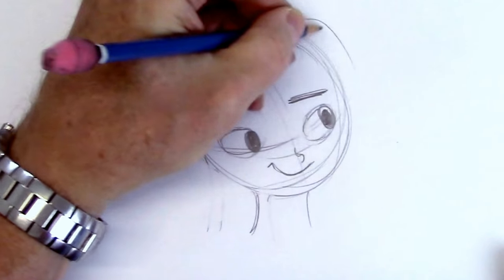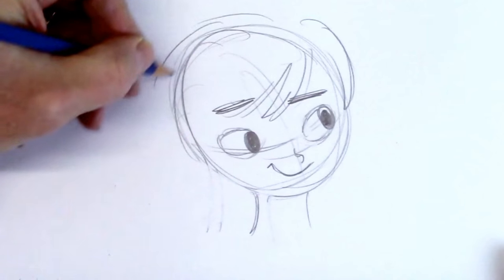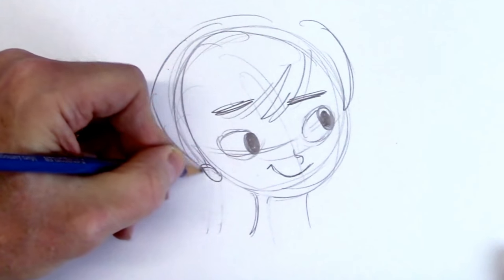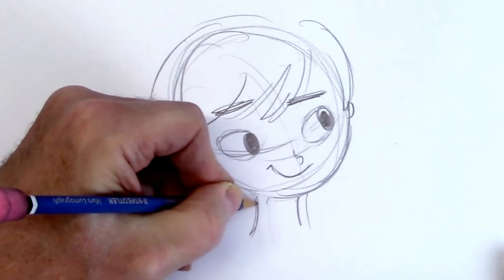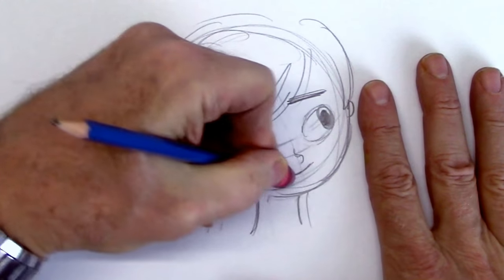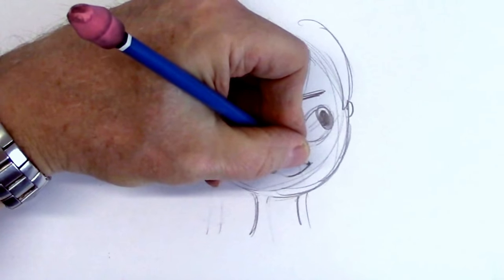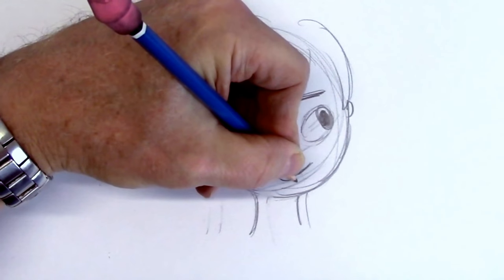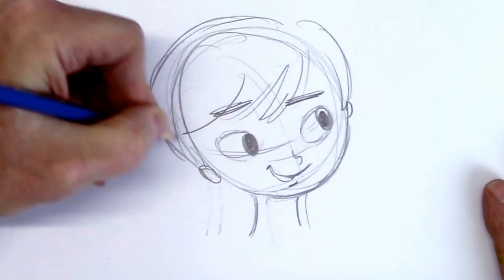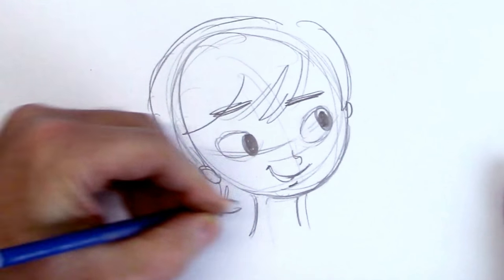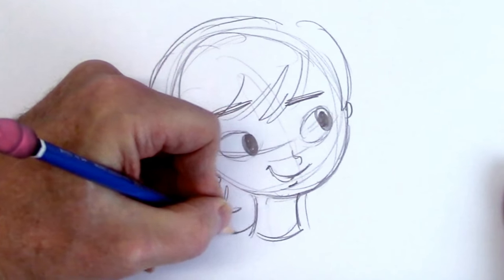So let's give him some floppy hair. So we have your basic cartoon kid, alright? But suppose we don't want your basic cartoon kid. We want to do something more with him.